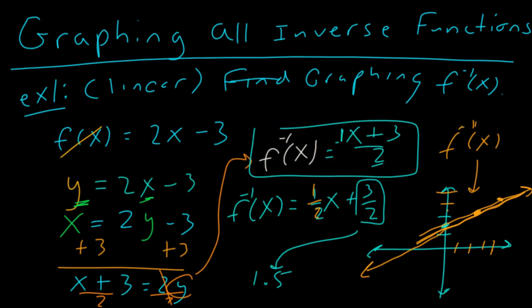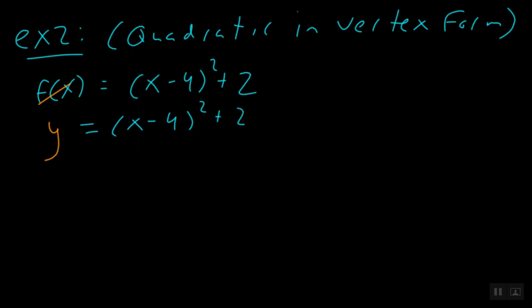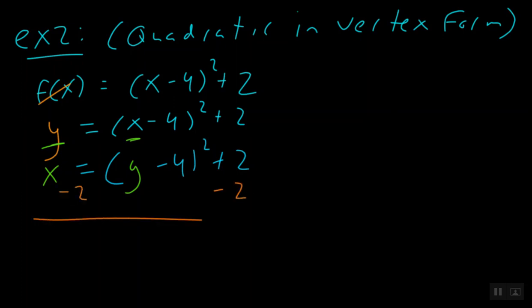Alright, and that was linear. Let's go on to example 2, which will be a quadratic in vertex form. Here we have f of x is equal to x minus 4 squared plus 2. We'll do all the typical things — change f of x into y, so y is equal to x minus 4 squared plus 2. Our next step is to take our x and our y and to flip them, giving x is equal to y minus 4 squared plus 2.